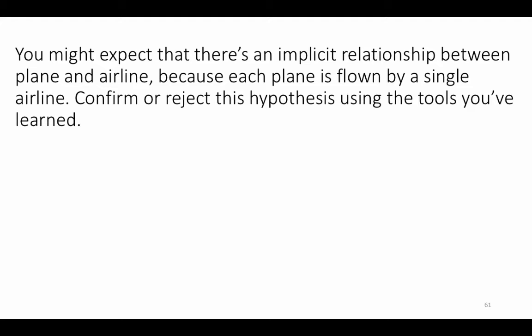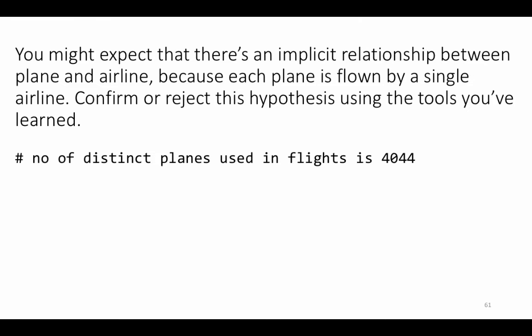A plane has a particular tail number. Let's say from January to March it was leased by United Airlines; they returned it at the end of the lease, and then in April it was leased by American Airlines. So you will find the same tail number having flown for multiple airlines. It could also be that a particular airline sold the plane to another airline — that's also a possibility.